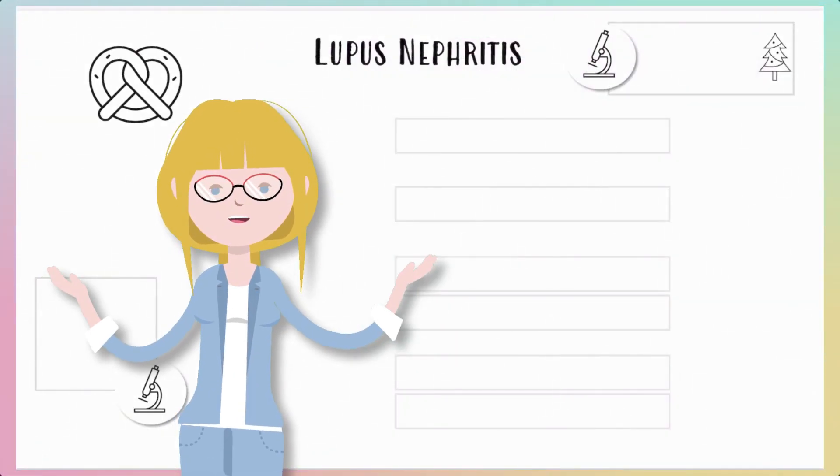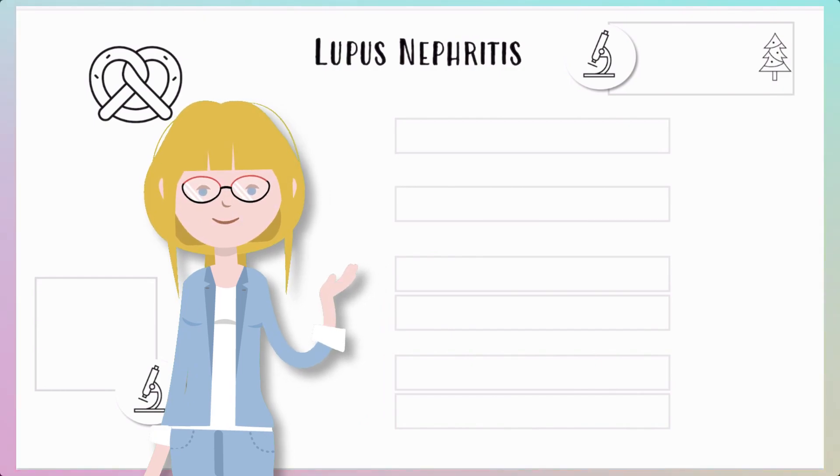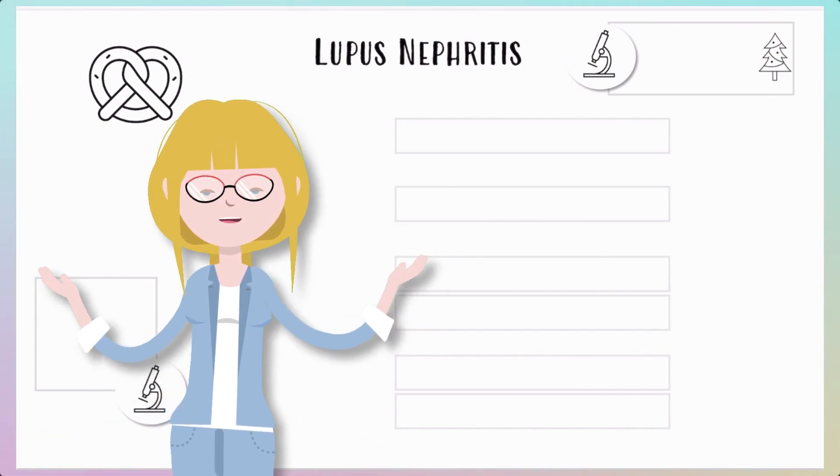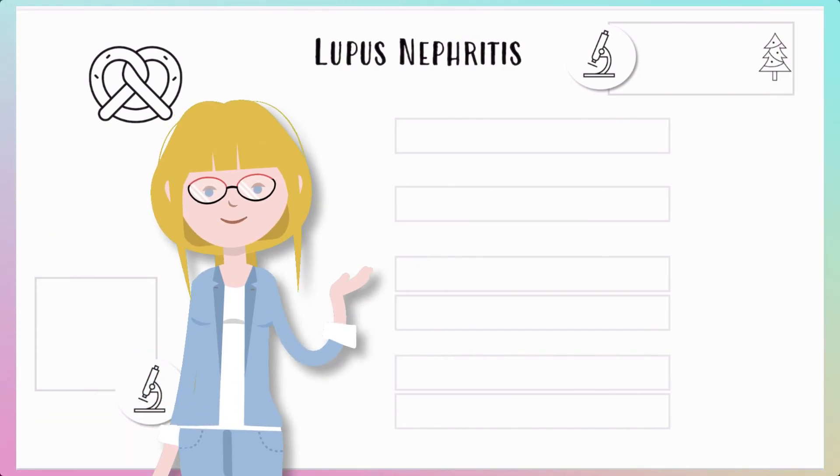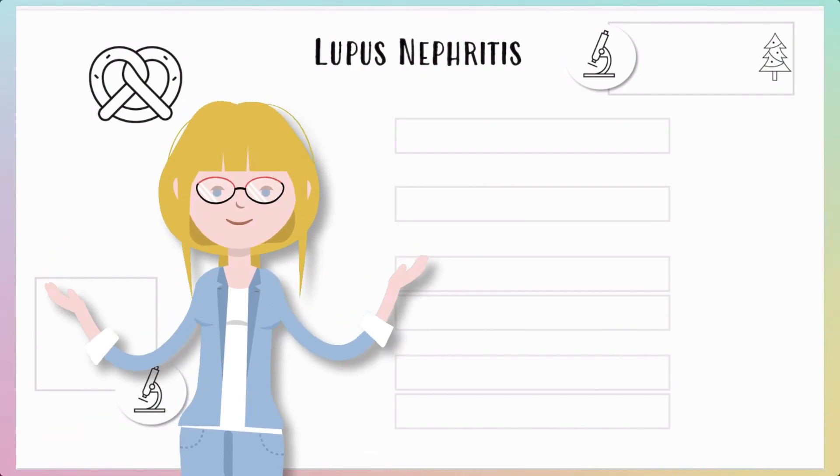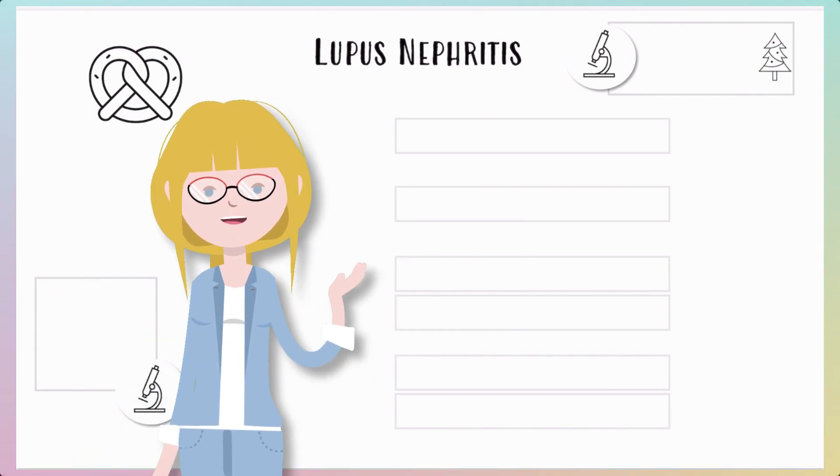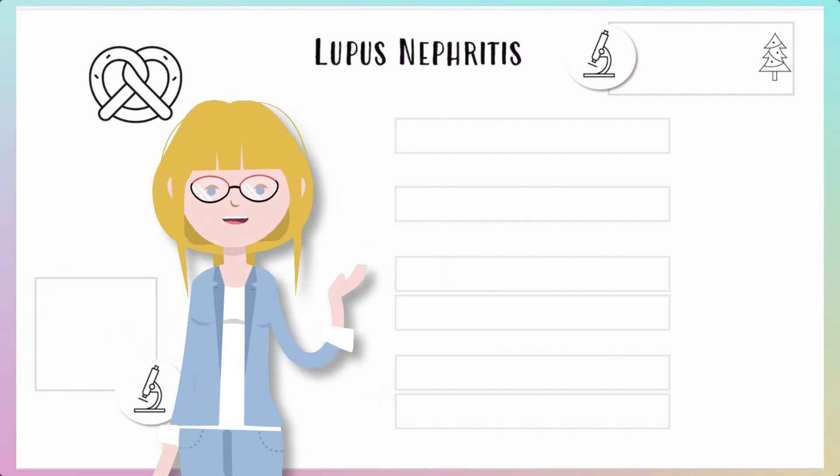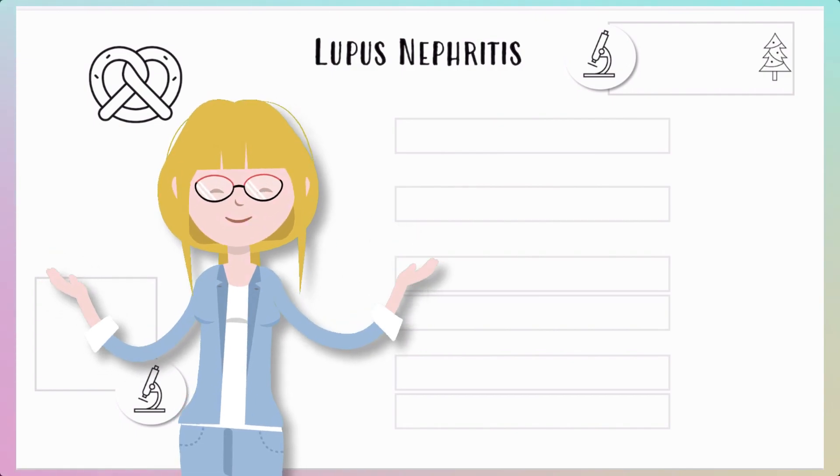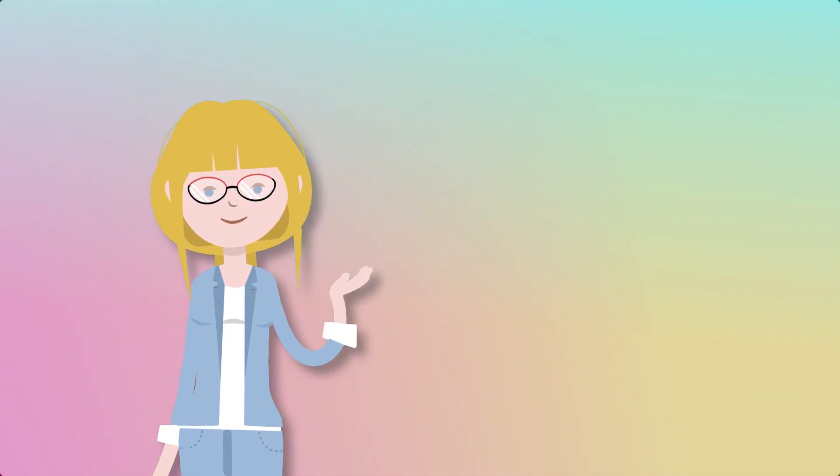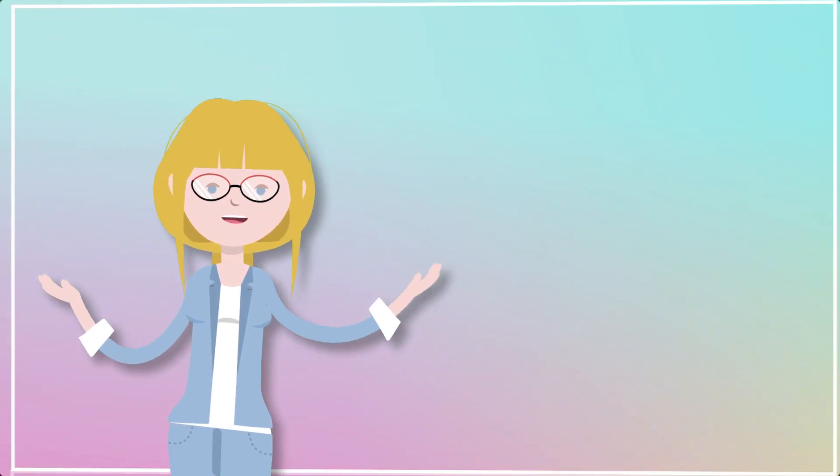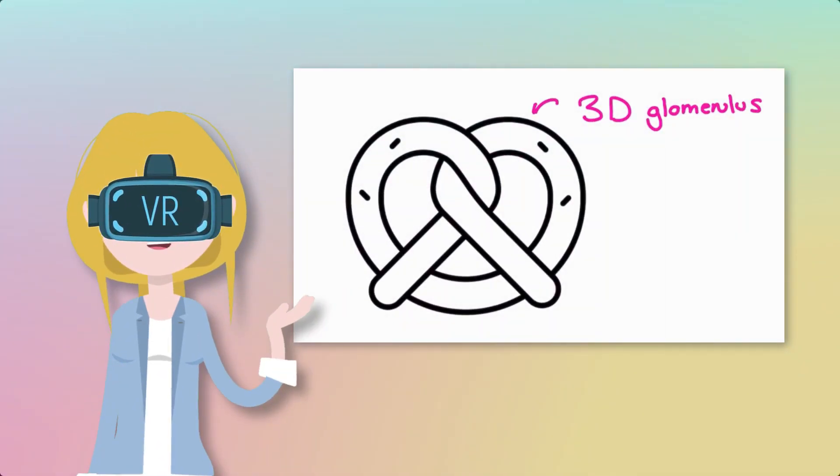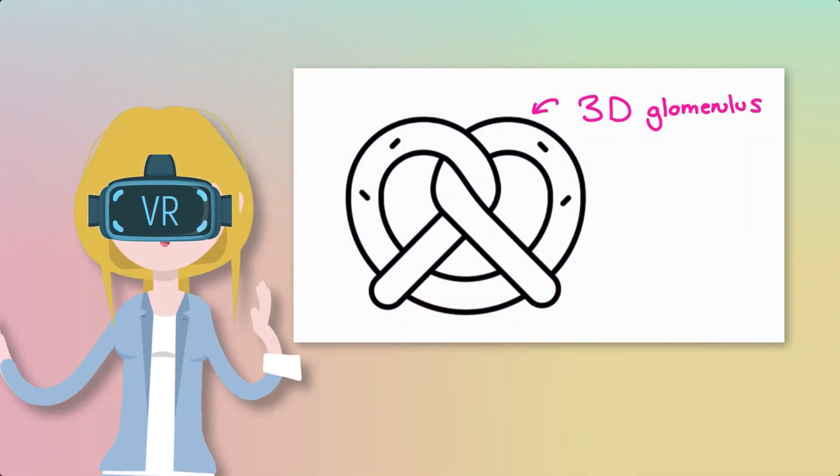When it comes to lupus nephritis, all of the concepts in that GN tutorial are relevant and we can apply those here so that we really understand lupus nephritis on a deep level. Just to recap, if you have not seen the tutorial or maybe if you watched it a while ago, we can think of the glomerulus in a couple of ways: in 3D and in 2D. For 3D I want you to visualize a pretzel.